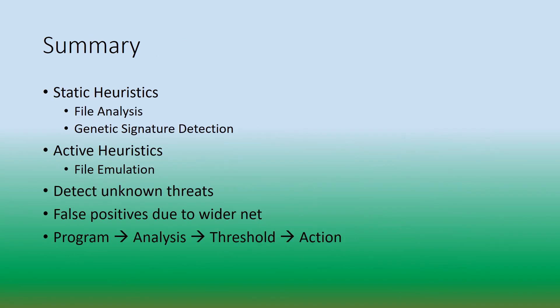In summary, heuristic-based detection uses two types of methods: static heuristics and active heuristics. In static heuristics, we looked at the contents of the file itself, and this was done through file analysis and genetic signature detection. In active heuristics, we looked at the behaviors of a file and the actions it performs, and this was done through file emulation.